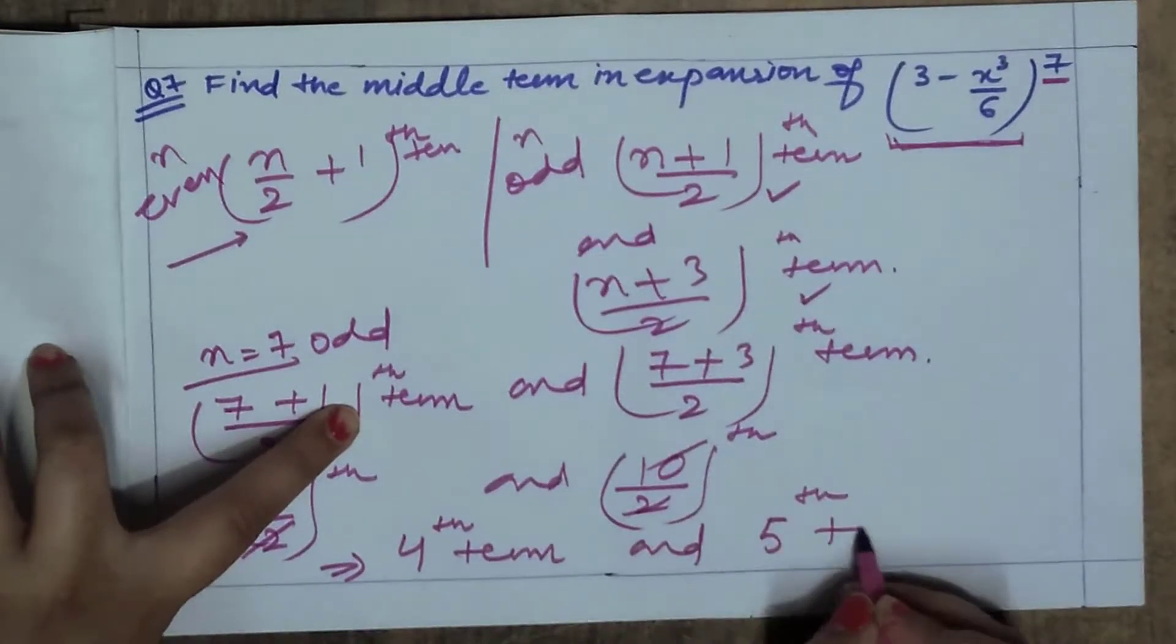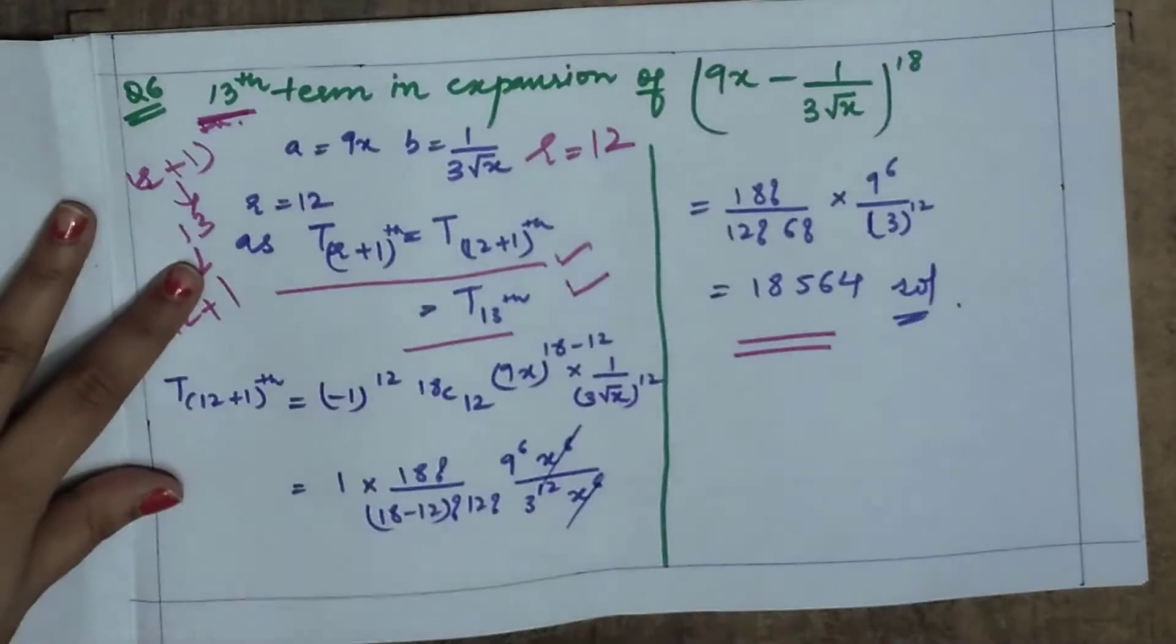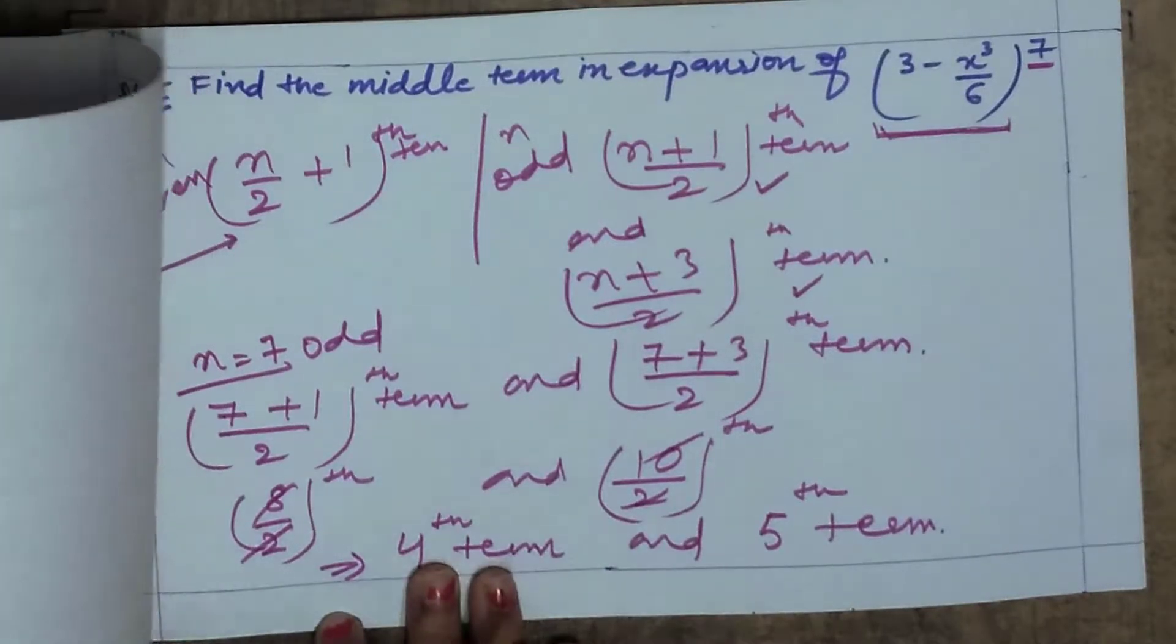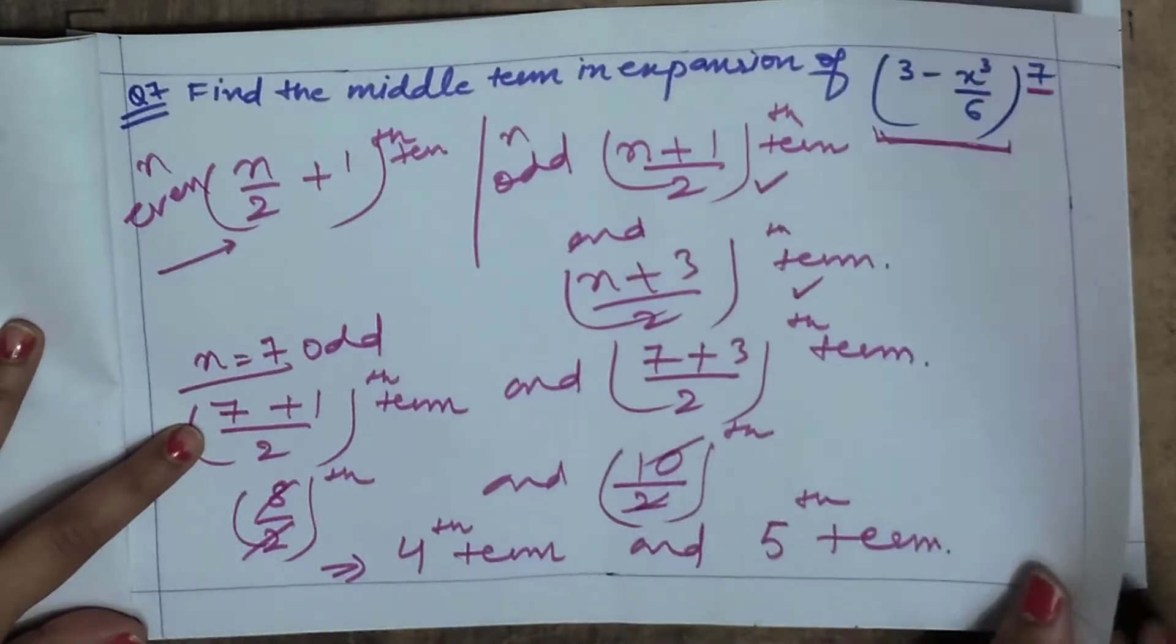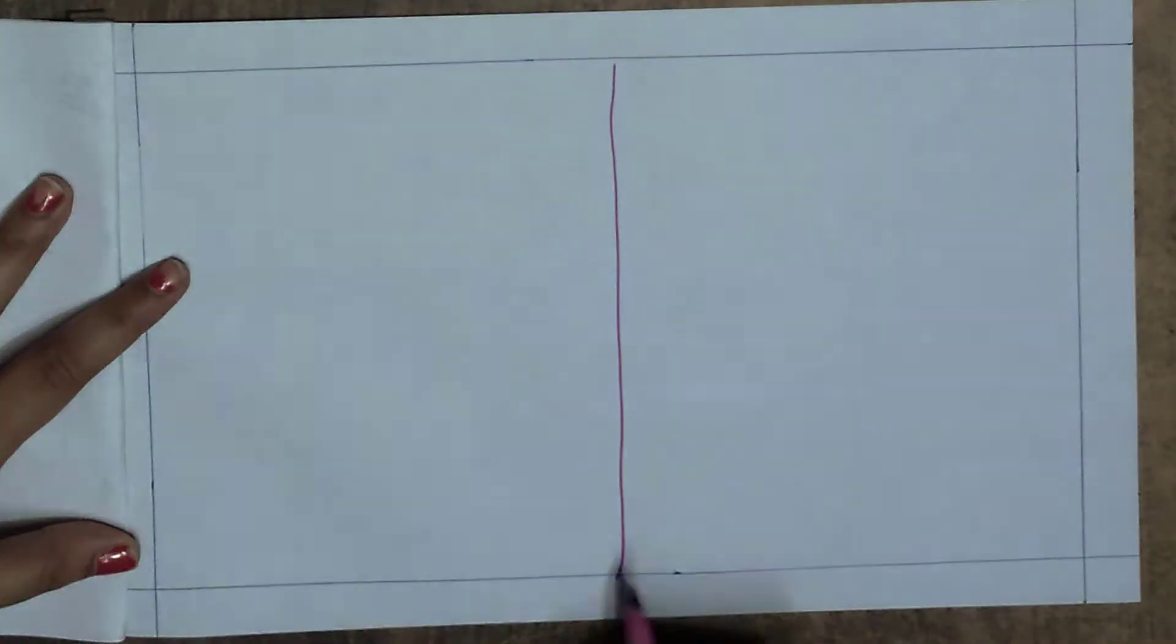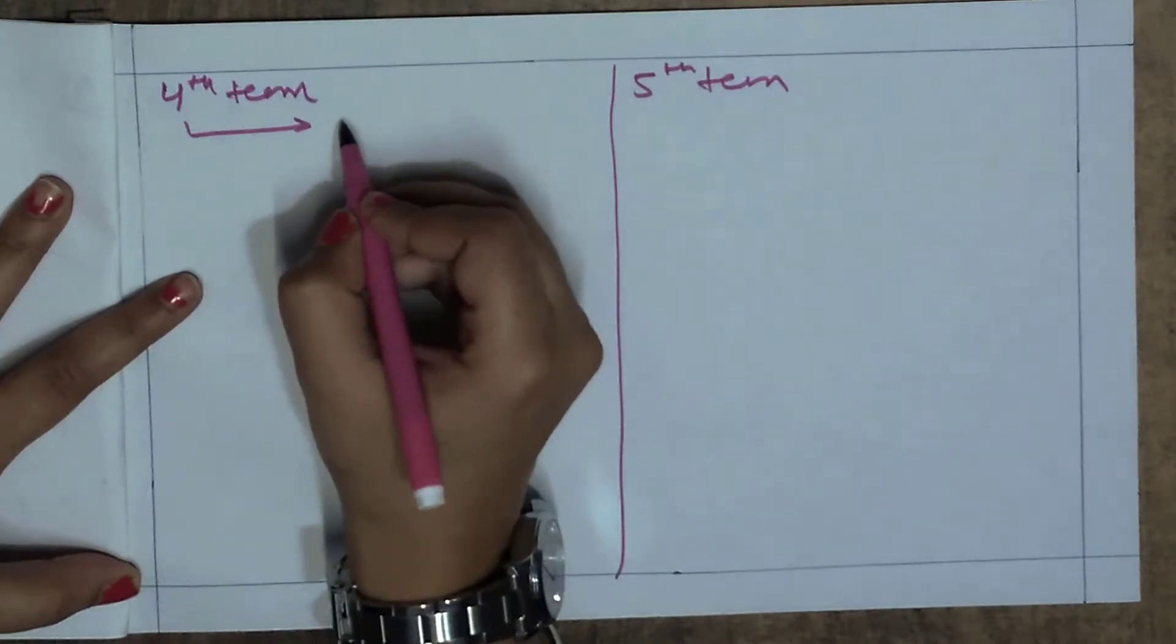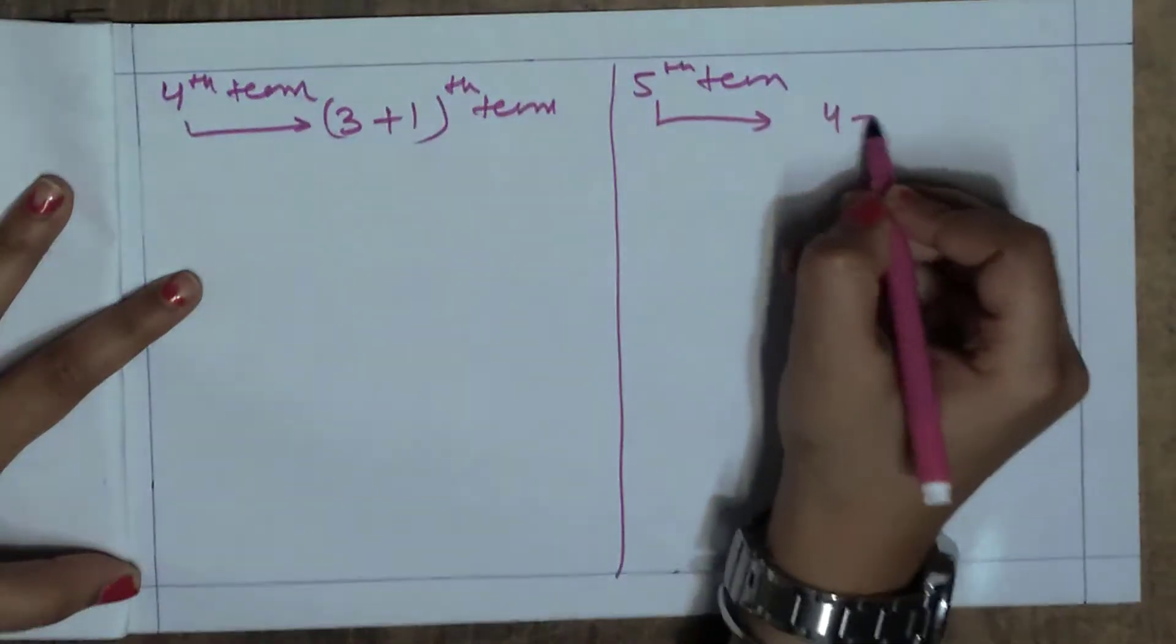The 4th term and 5th term. So for 4th, it is 4th term and 5th term. How do you write this in r plus 1? 3 plus 1th term. And how do you write this? 4 plus 1th term.